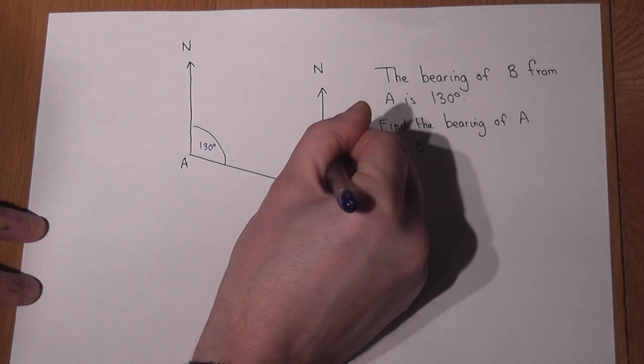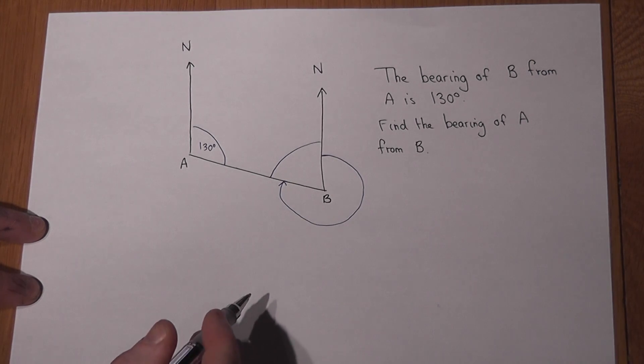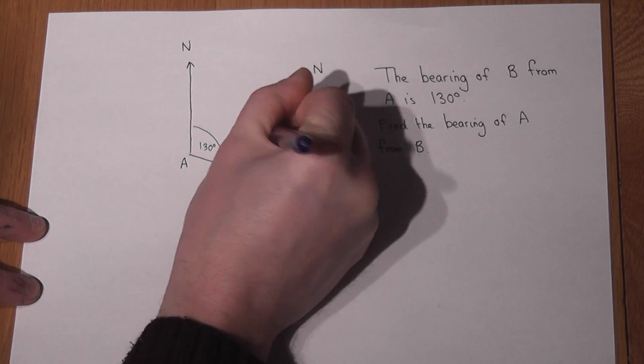So these two angles 130 and this one add to 180 again they're called co-interior.